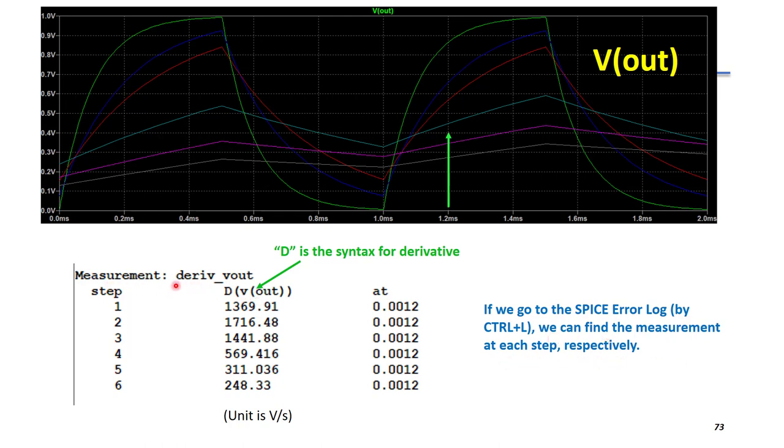So the measurement has a new name, which is derivative underscore Vout. You can see the measurement has a capital D. So this capital D is the syntax for derivative in LTSpice. We can see the second case has the highest dV over dT at the moment of 1.2 milliseconds.